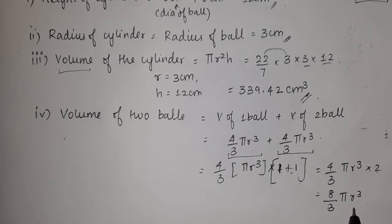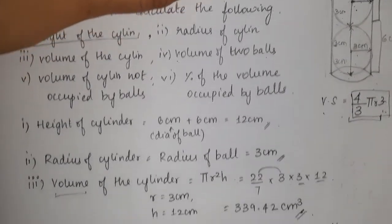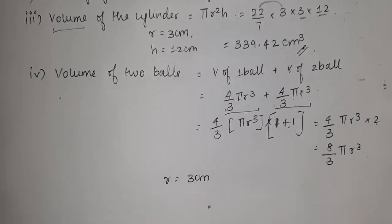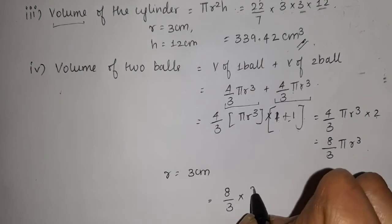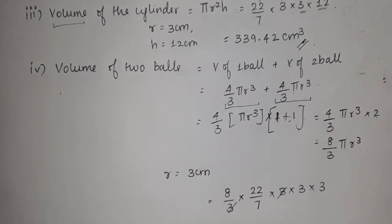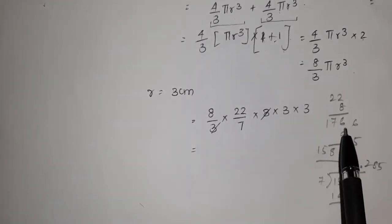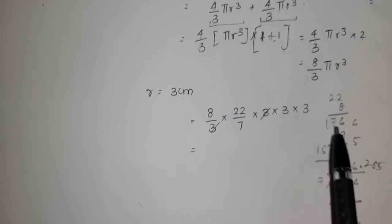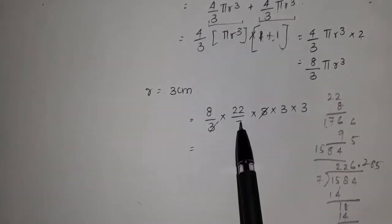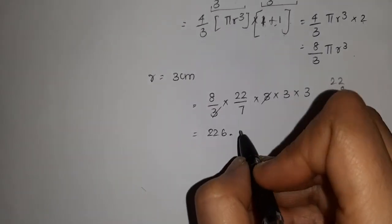Substituting the values: 8/3 into 22/7 into r³, where r is 3 cm, so 3 into 3 into 3. The 3 in the denominator and one 3 in r³ cancel. Multiplying 8 into 22 gives 176, and 3 into 3 gives 9, so numerator is 1584. Dividing 1584 by 7 gives 226.285. So the volume of two balls is 226.285 cubic centimeters.